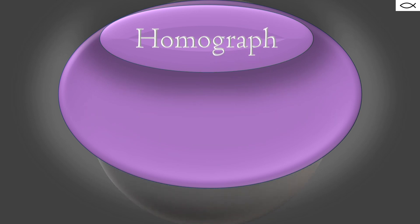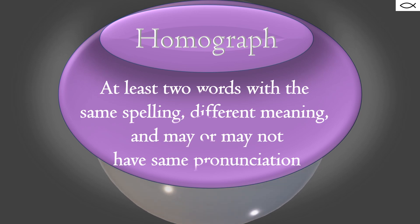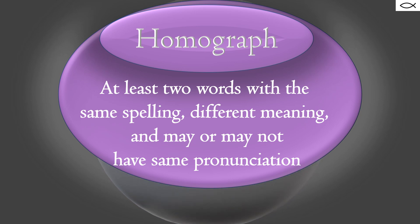A homograph consists of at least two words with the same spelling, different meaning, and may or may not have the same pronunciation.